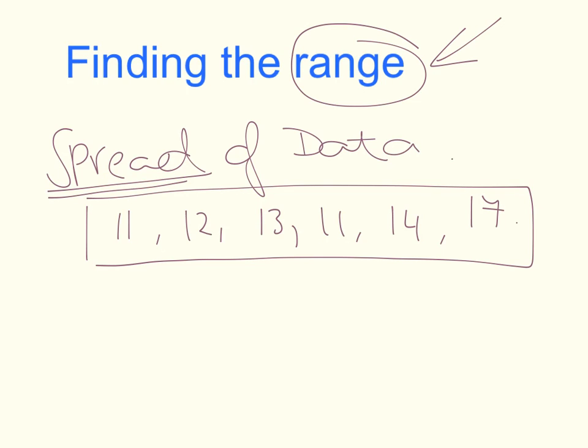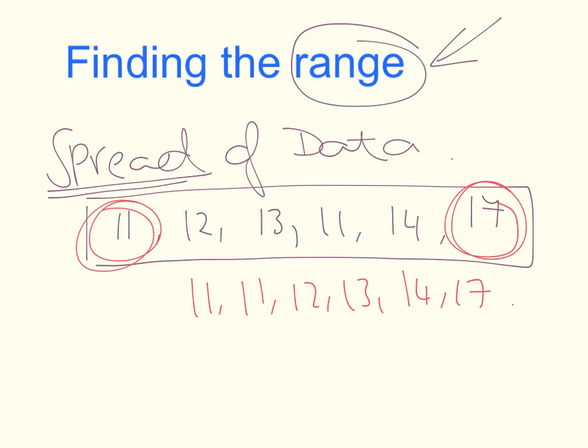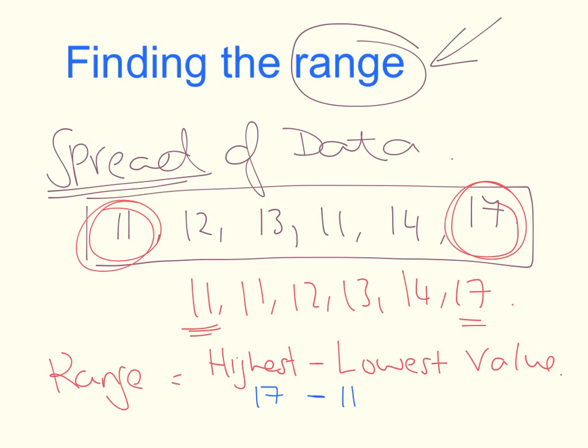The lowest number in this instance here is 11, and the highest number is 17. I can write them in order: 11, 11, 12, 13, 14, 17. That can help me if I have a lot of data and I'm not sure which is the lowest and which is the highest. In order to find the range, all I need to do, nice and simple, is I subtract. I have the highest value minus the lowest value. So in this instance, the highest value is 17, and then from that I take the lowest value, which is 11. So I can see that the range in this question is 6.